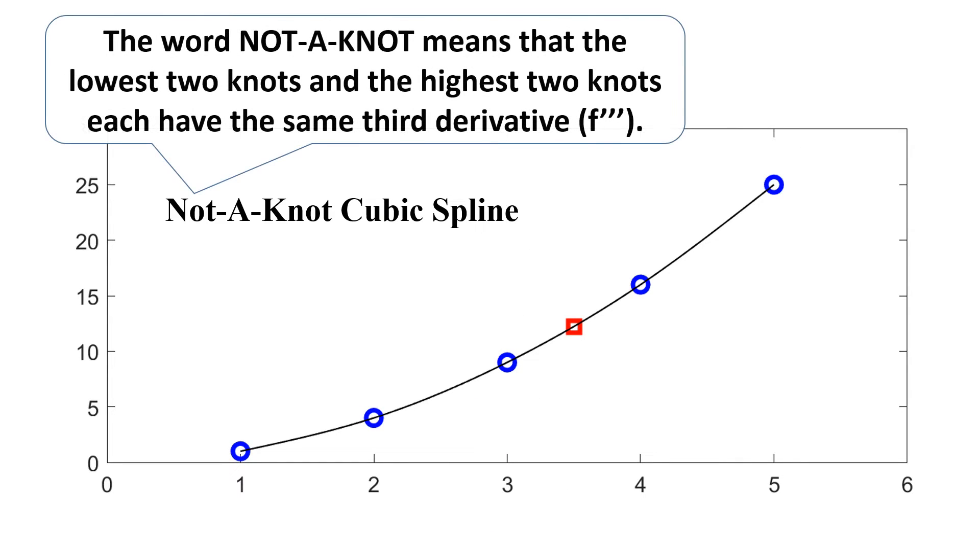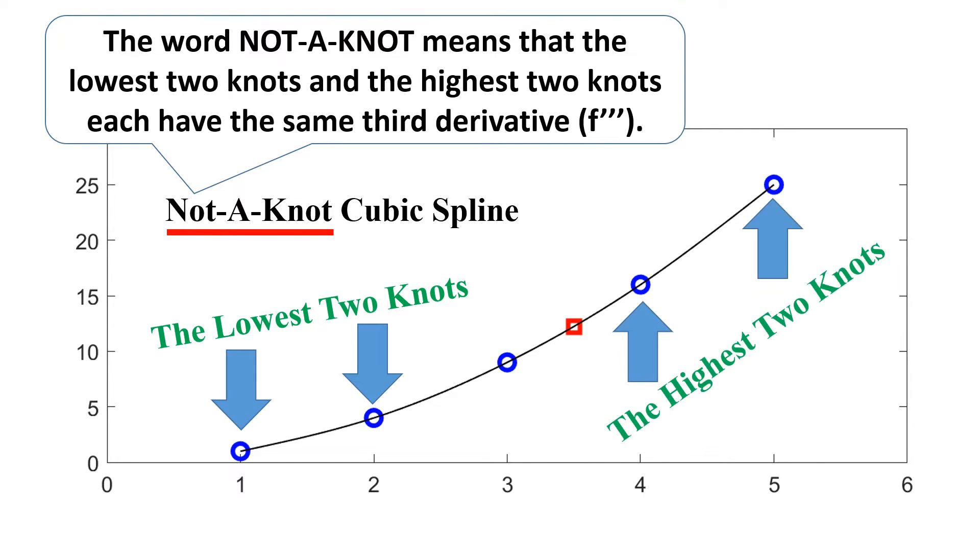The word not-a-knot means that the lowest two knots and the highest two knots each have the same third derivative.